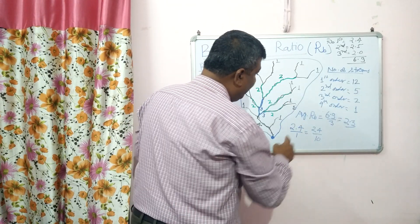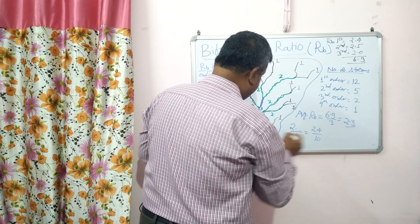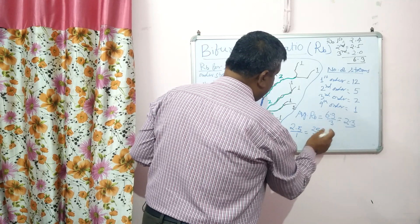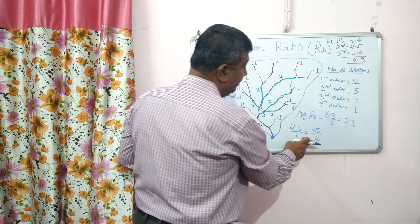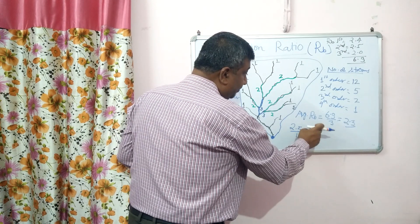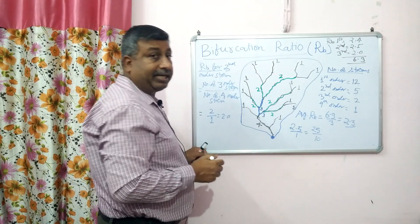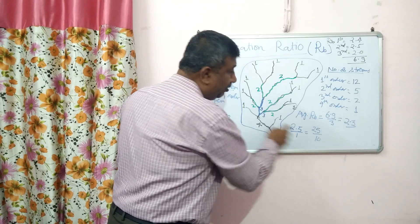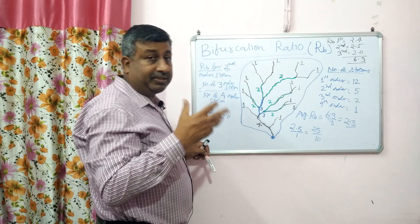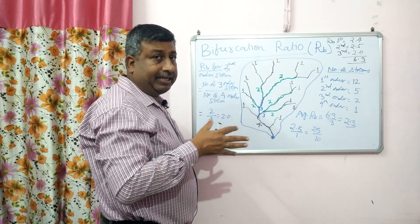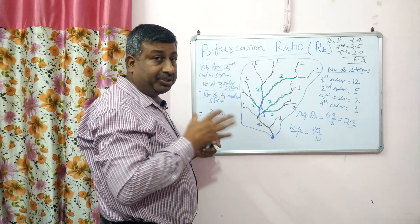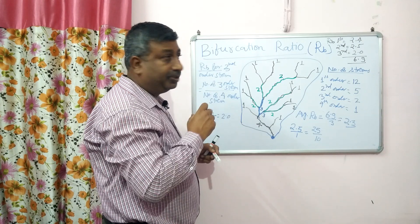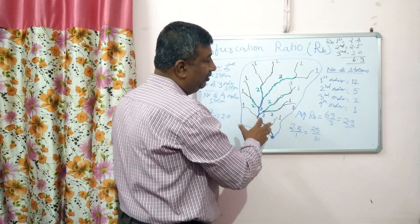For Rb = 2.5, we can write 25 upon 10, meaning when 25 second order streams meet, they make 10 third order streams. So 25 second order streams joining together produce 10 third order streams. This is the average value.